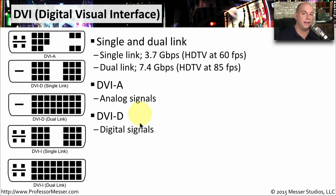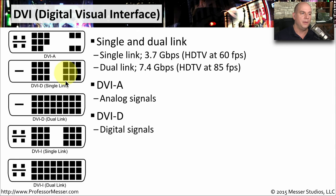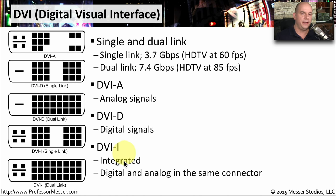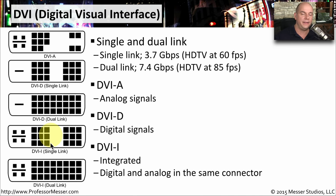DVI-D is the DVI for digital signals. You can see the two DVI-D connectors for the single link and the dual link, and there are a number of pin differences between those two interface types. The last type is DVI-I, where the I stands for integrated — combining digital and analog signals in the same connector. You can see both the single link and dual link connectors for DVI-I.